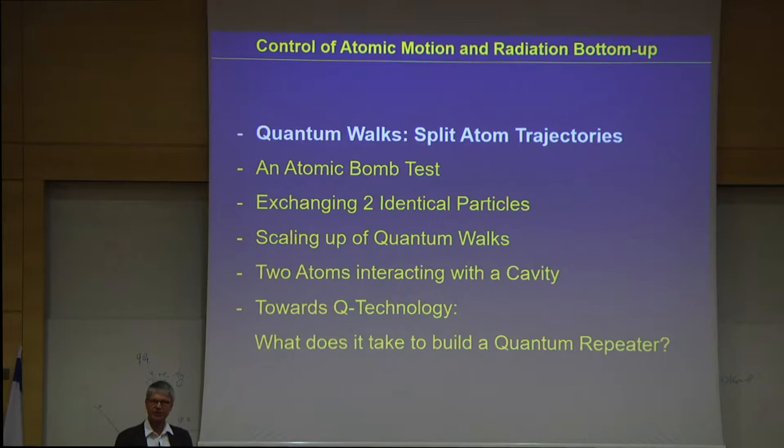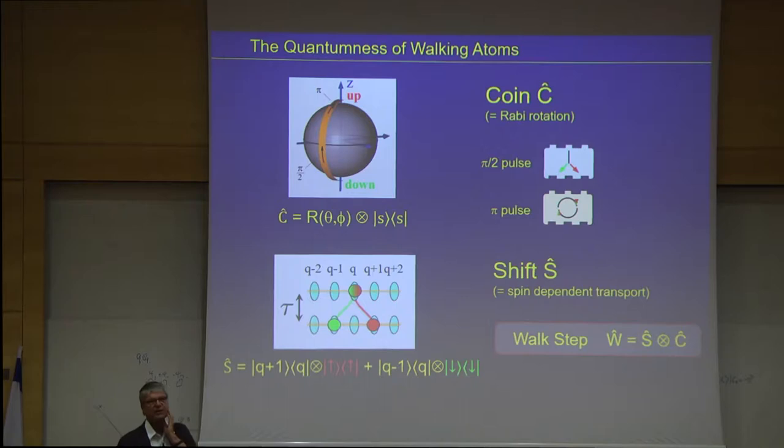So this is what I want to talk about. The first thing is about quantum walks. Quantum walks, in the end, is splitting the trajectories of atoms, and even the two-slit experiment. Then I will talk about, it's like a remake of a movie, an atomic bomb test. It's the Eliezer Weitmann experiment, which is 30 years old, and we made a remake. Then I will talk about a new idea, which is today coming onto the archive, of exchanging two identical particles. And then we will go on a little more towards quantum technology, perhaps.